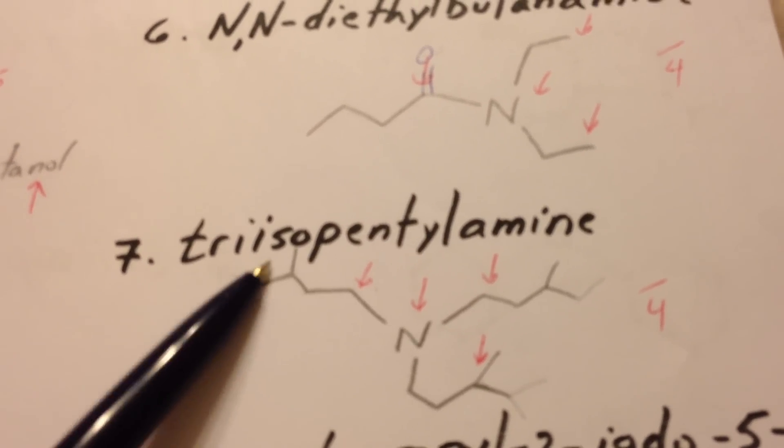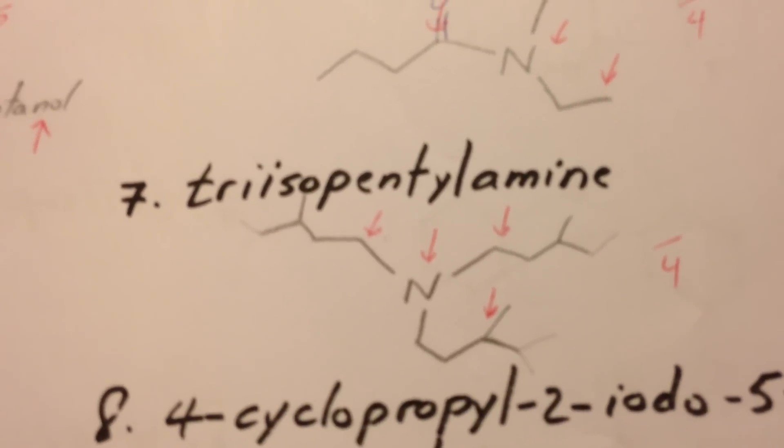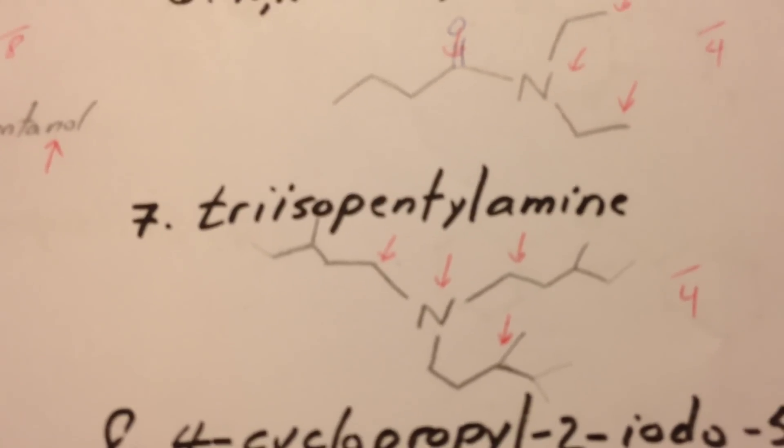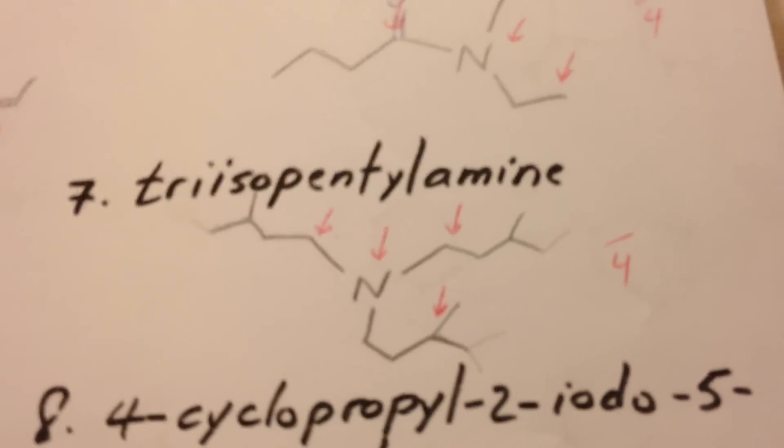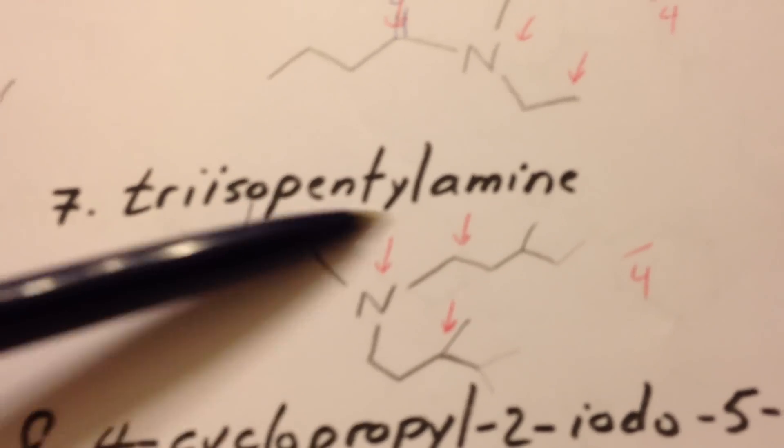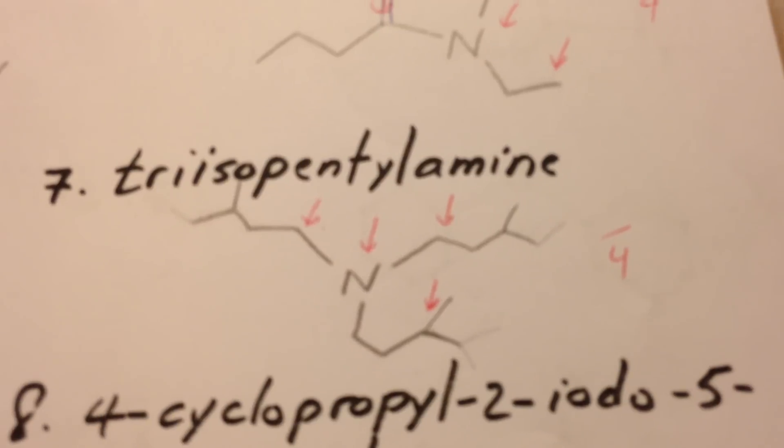And just like isopropyl would. There are three of them attached to the nitrogen atom. So we call this triisopentylamine. Four marks for that one.